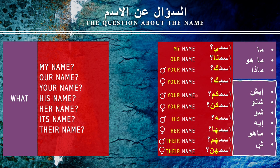In the Saudi dialect using 'ish': 'ish ismi' — what is my name? 'Ish ismana' — our name. 'Ish ismak' — your name masculine. 'Ish ismik' — your name feminine. 'Ish ismukum' — your name plural masculine. 'Ish ismukun' — plural feminine. 'Ish ismo' — his name. 'Ish ismaha' — her name. 'Ish ismuhum' — their name masculine. 'Ish ismuhun' — their name feminine.